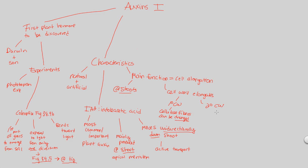The secondary cell wall consists of cellulose as well, but also lignin — a very strong structural polymer — making it unable to expand. The key distinction is that auxins function at the primary cell wall specifically, because that's what can be changed, manipulated, and elongated. The secondary cell wall cannot be elongated due to the presence of lignin.